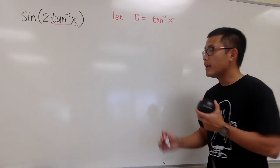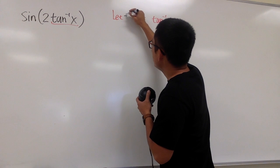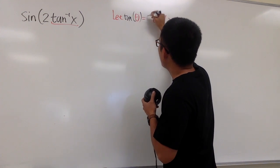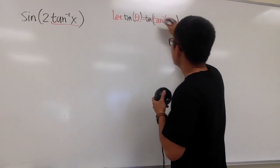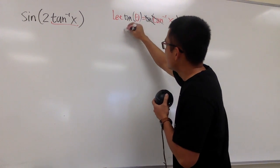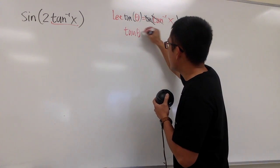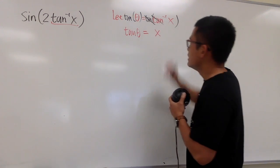This is what I'm going to do. I am going to apply the original tangent on both sides so that this and that will cancel out, and we will have tan(θ) = x.